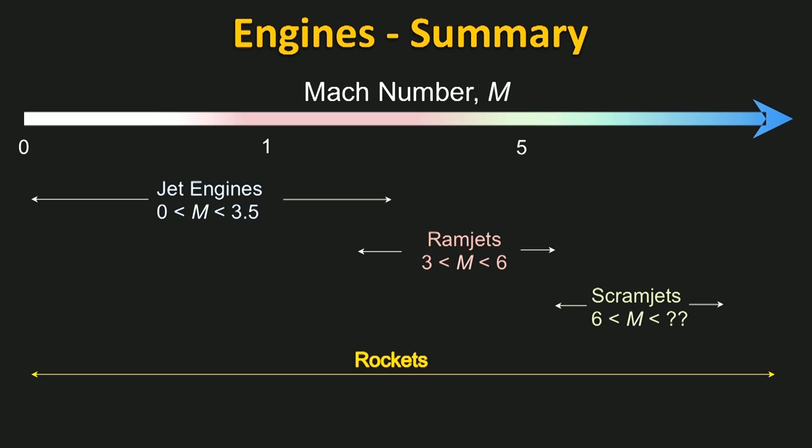Rockets are less efficient, but they can operate over all the Mach number regimes. In the next unit, we'll derive and use the so-called rocket equation to see why we might want to use a scramjet engine for a stage of a launch vehicle.